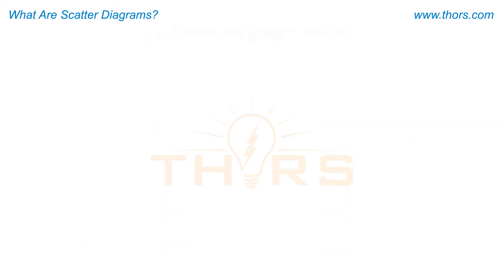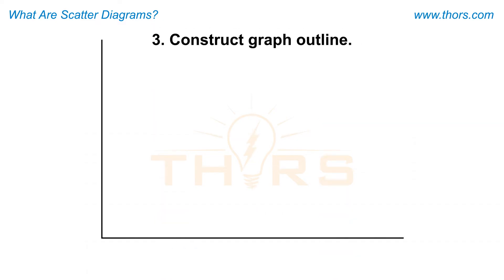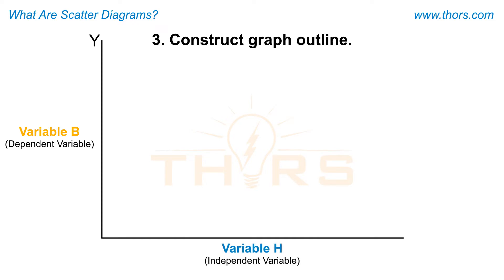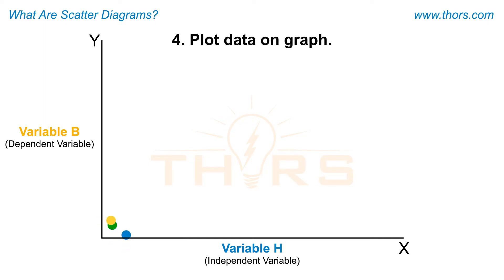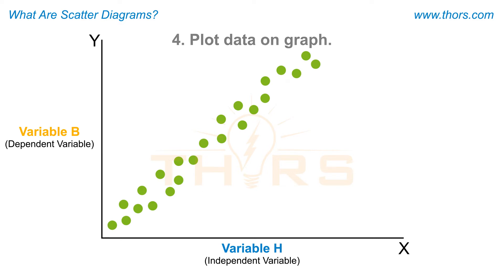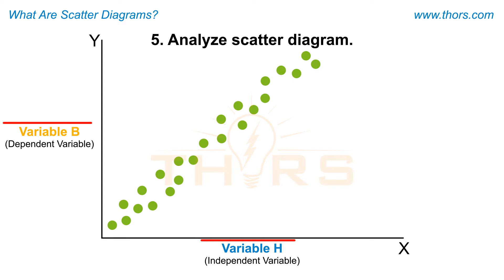Next, the graph is constructed by first assigning the dependent variable to the vertical y-axis and the independent variable to the horizontal x-axis. Finally, the scatter diagram is created by plotting the collected data on a graph. The scatter diagram is now complete, and the diagram can be analyzed to identify the nature of the relationship between the two plotted variables.